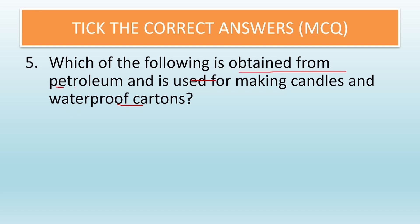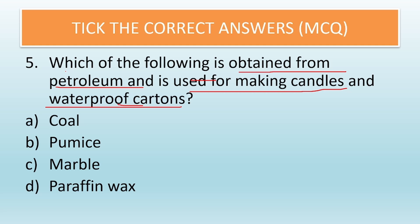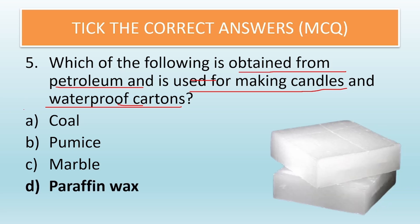The next question is: which of the following is obtained from petroleum and is used for making candles and waterproof cartons? Options are coal, pumice, marble, or paraffin wax. The correct answer is paraffin wax. Let us tick mark paraffin wax, and this is the image of paraffin wax.